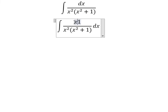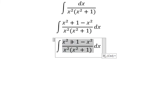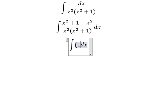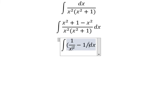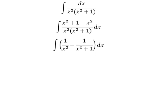Next I will add x squared in the numerator, and later we need to minus x squared to keep it equivalent. So this one divided by this one and this one divided by this one, so we have one over x squared minus one over x squared plus one. Now we have the integral of one over x squared, which gives us